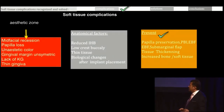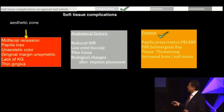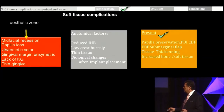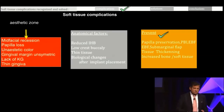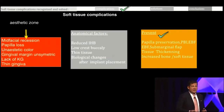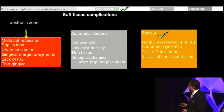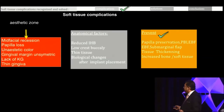From a soft tissue perspective, what do we have? We have soft tissue complications which are due to the anatomy of the patient, and we try to find ways to prevent them.